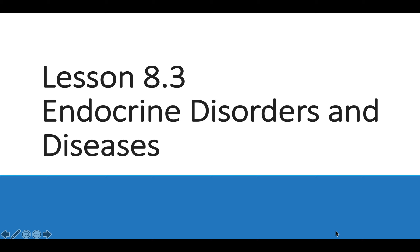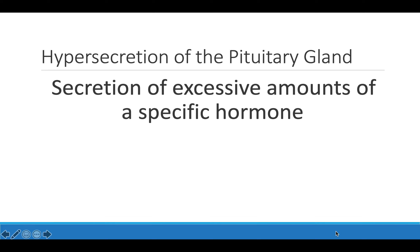In Lesson 8.3, we are going to talk about different malfunctions that the endocrine gland can have — basically if it's not releasing enough hormones or it's releasing too much of a hormone. One of the first things we're going to talk about is pituitary disorders. We're going to talk about hypersecretion and hyposecretion. Hypersecretion means there is an excessive amount of a specific hormone being secreted by a specific gland — in this case, your pituitary gland.